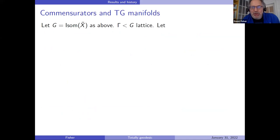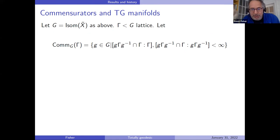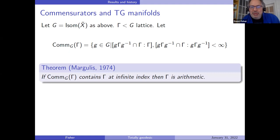Let me talk about commensurators and totally geodesic submanifolds. We have this group G — you're welcome to think of it as SO(n,1) throughout the talk — and we have this lattice gamma sitting in G. We let the commensurator in G of gamma be the set of g's where if I conjugate gamma by g, the resulting group has intersection with gamma that's finite index in both gamma and itself. This is some sort of almost-normality under conjugation by G — you don't quite get the same group back, but you only miss by a finite amount.